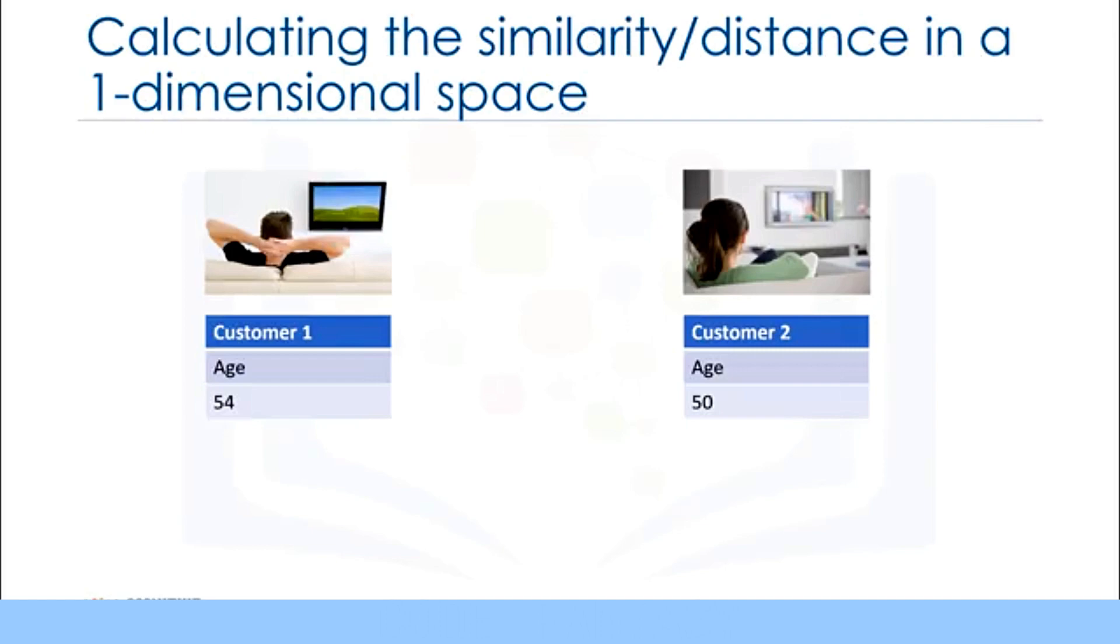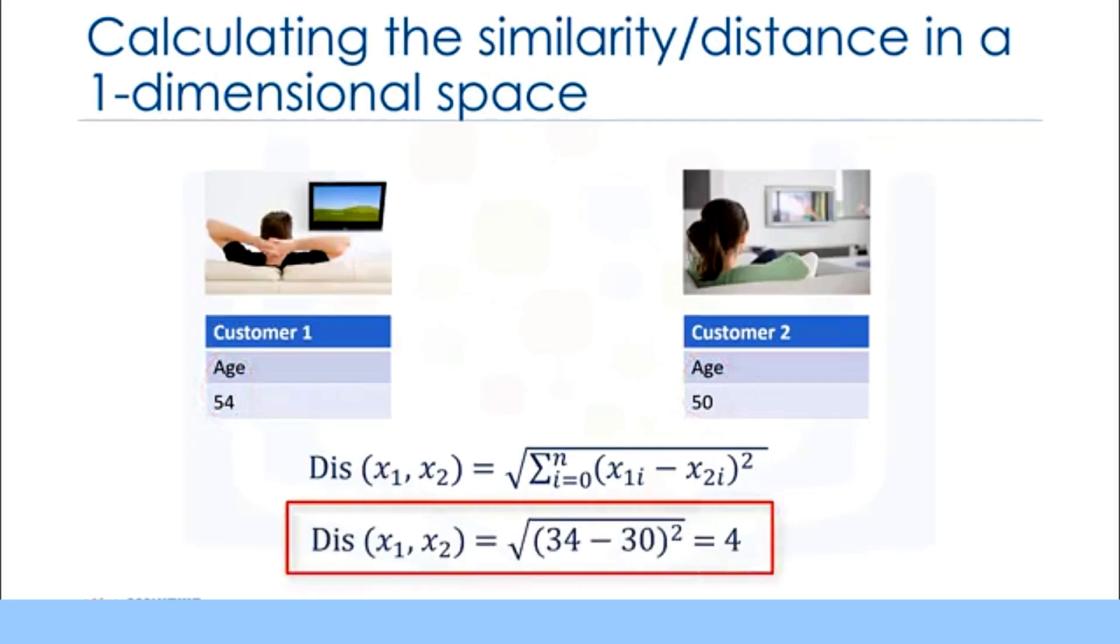Assume that we have two customers, customer 1 and customer 2. And for a moment, assume that these two customers have only one feature, age. We can easily use a specific type of Minkowski distance to calculate the distance of these two customers. It is indeed the Euclidean distance. Distance of x1 from x2 is root of 34 minus 30 to power of 2, which is 4.